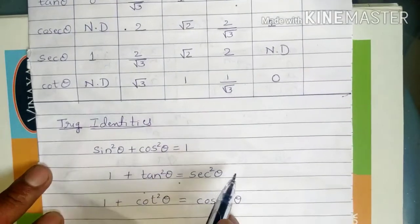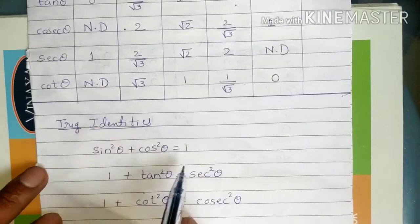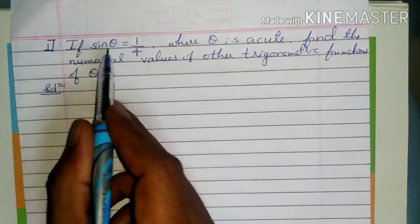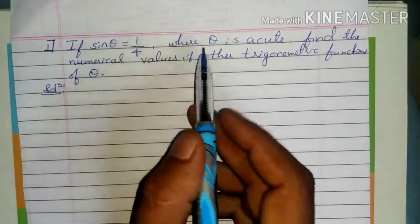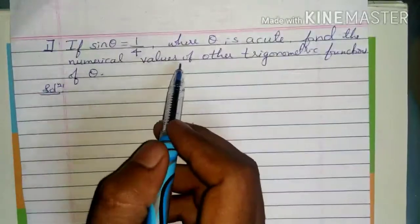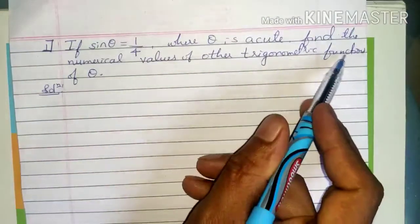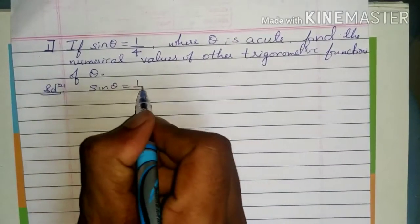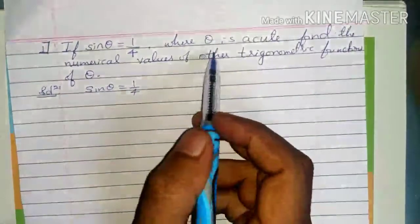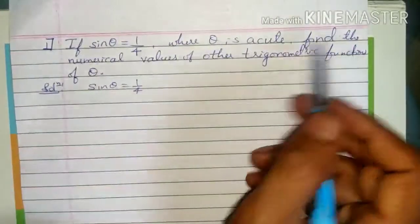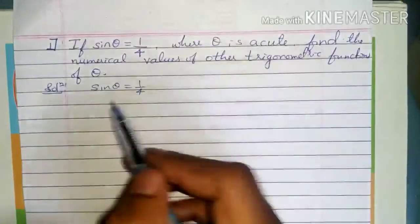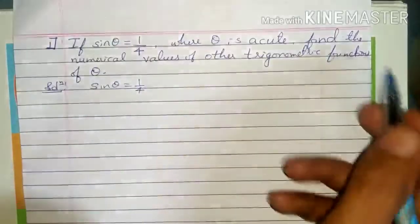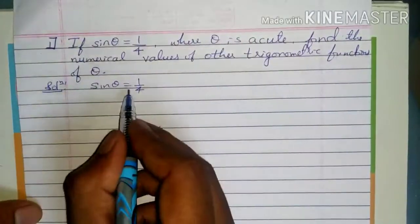Using these identities and functions, we are going to solve some problems. First example: if sin theta equals 1 by 4, where theta is acute, find the numerical values of the other trigonometric functions. We have to find cos theta, tan theta, and the remaining trigonometric function values. Only sin theta is given.